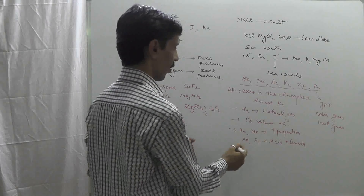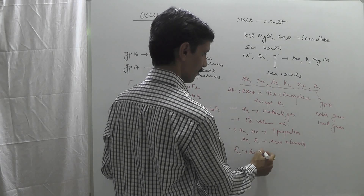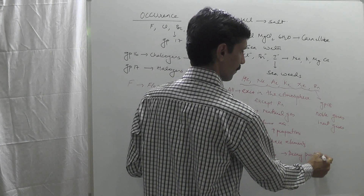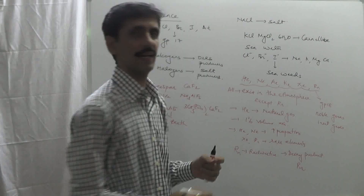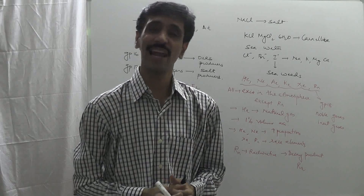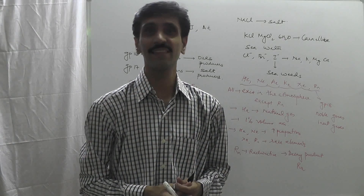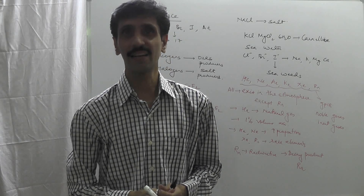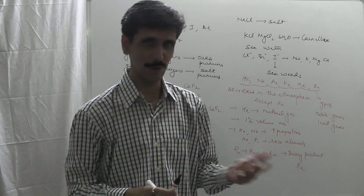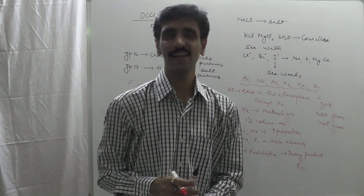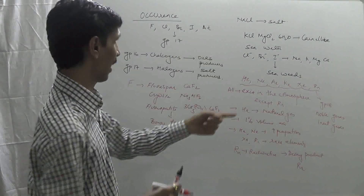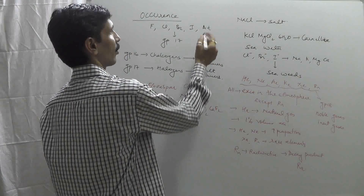Radon is considered to be radioactive and is actually a decay product of radium. Radium has an atomic mass of around 226 and is the last element of group 2, called alkaline earth metals. When radium undergoes radioactive disintegration, one of the products obtained is radon. Similarly, astatine — the last element of group 17 — is also going to be radioactive.